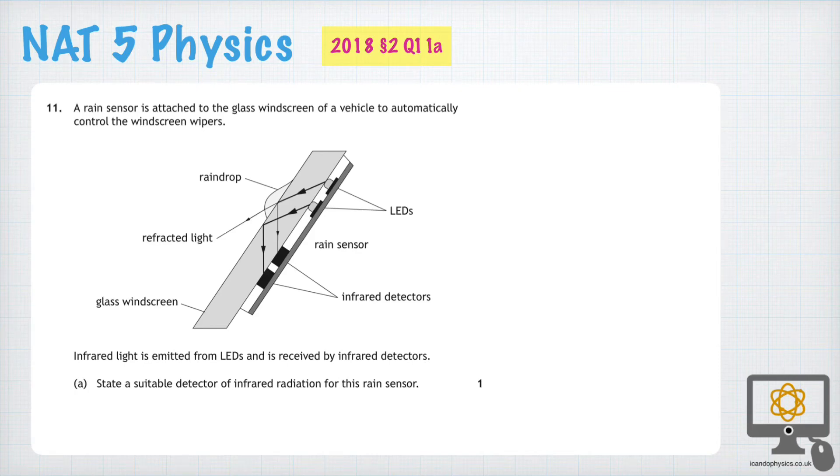Question 11A from the 2018 National 5 Physics paper assesses our understanding of suitable detectors of radiation, particularly in this case infrared radiation. We're meant to be able to give examples of detectors for all types of radiation in the electromagnetic spectrum.